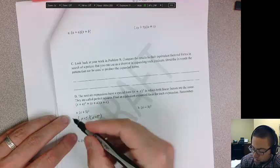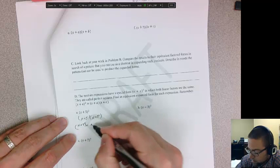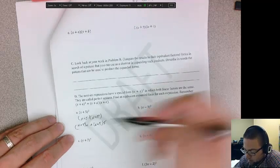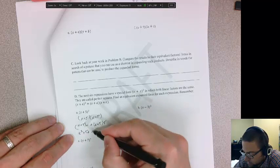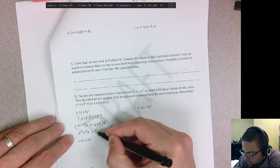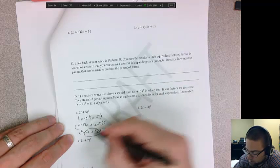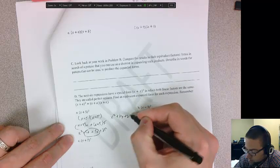And we're going to double distribute. So x plus 5 times x and x plus 5 times 5. And then back distribute, x squared plus 5x. And this is 5x plus 25. And then the 5x is combined to make 10x. So x squared plus 10x plus 25.